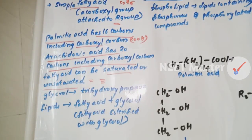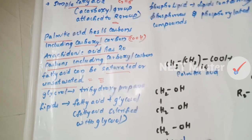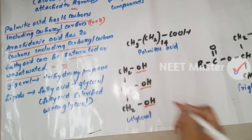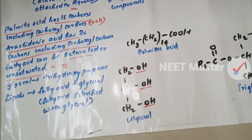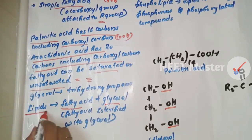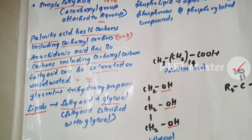Glycerol is trihydroxy propane — it has 3 OH groups. Some lipids contain both fatty acid and glycerol. Fatty acid is esterified with glycerol to form esterified lipids.